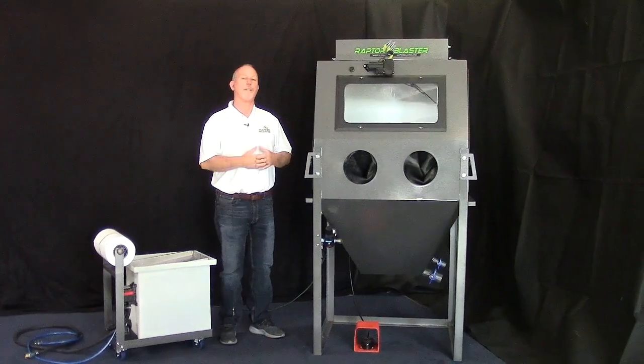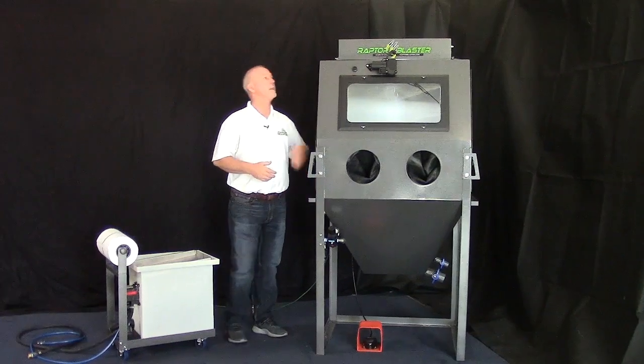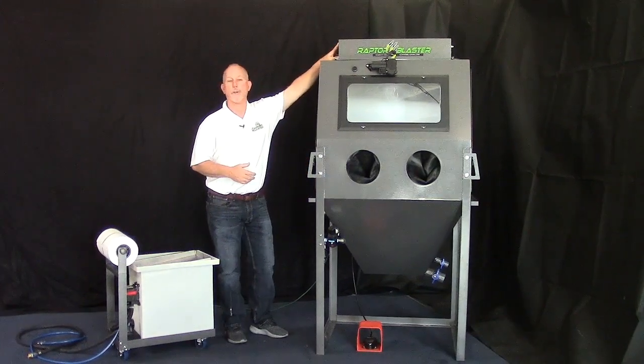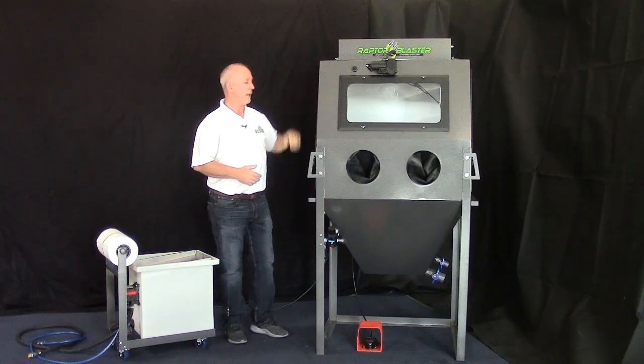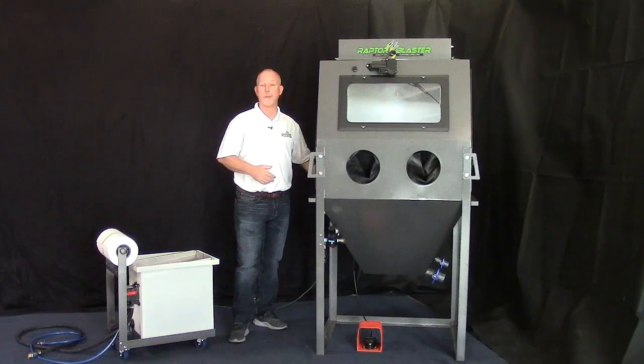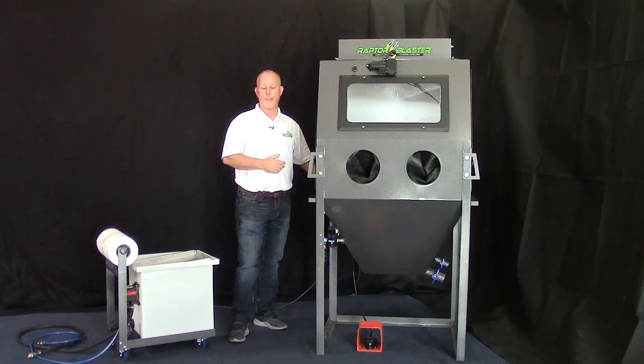So the three things you need to get this cabinet running is, one, air to the air inlet, two, plug the 110 cord of the light box into a wall socket, and three, hook a hose for your fresh water rinse on the back of the cabinet on the water inlet.